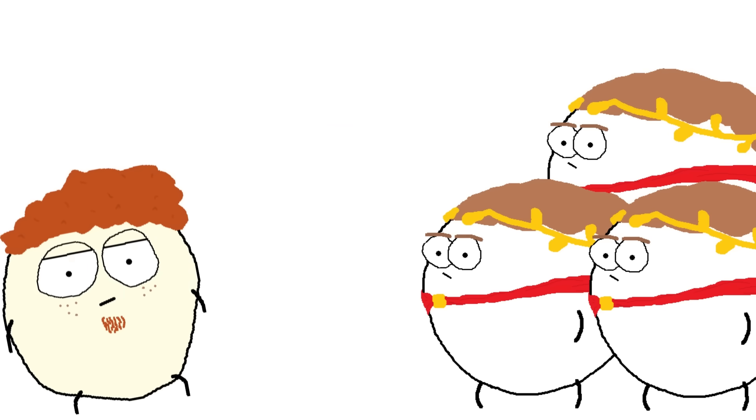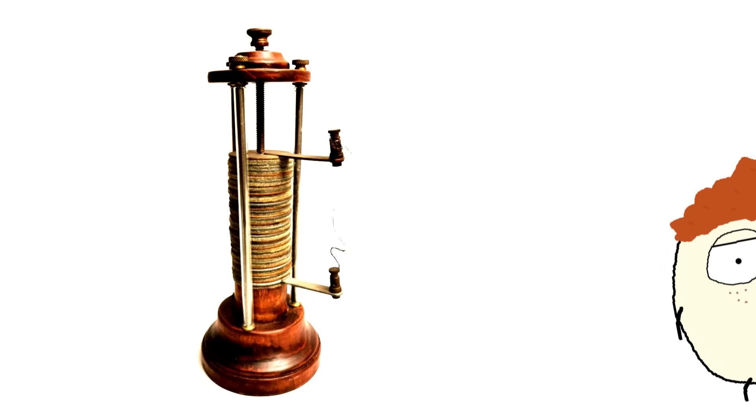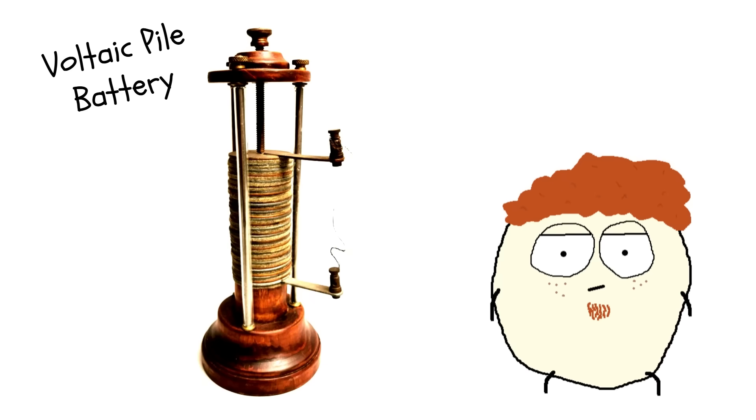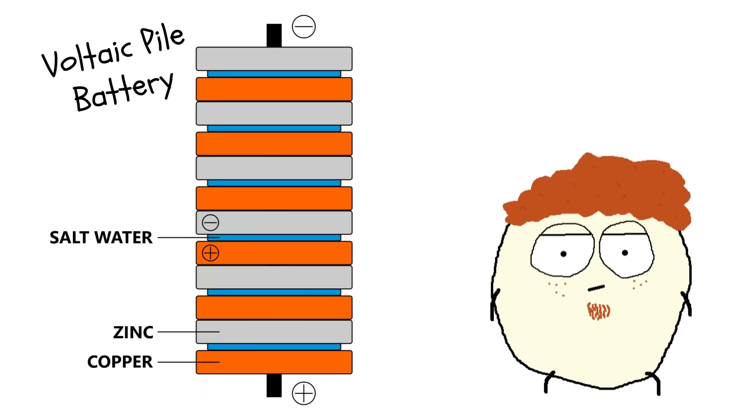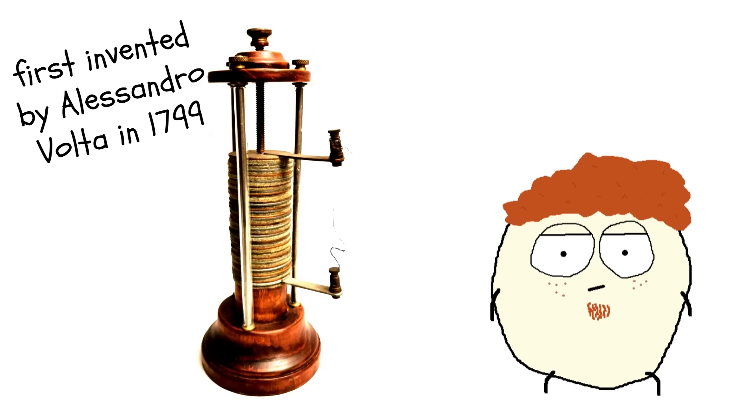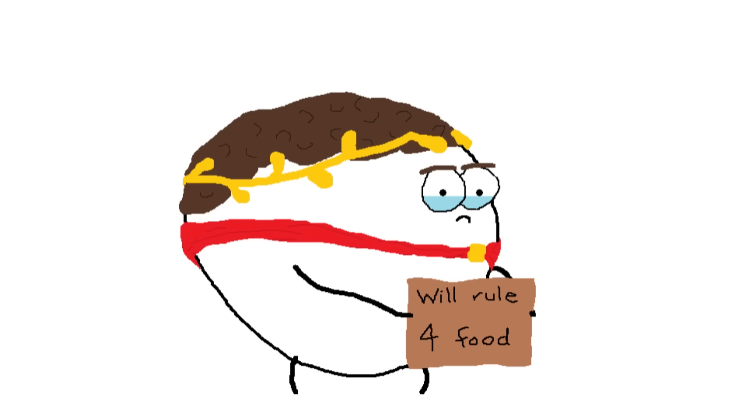While they work on the vacuum tubes, Fred moves on to the power source. He could relatively easily make an archaic, voltaic pile battery just using copper, zinc, and salt water, but these things aren't efficient or powerful enough. He'd need enough metal to bankrupt the empire.